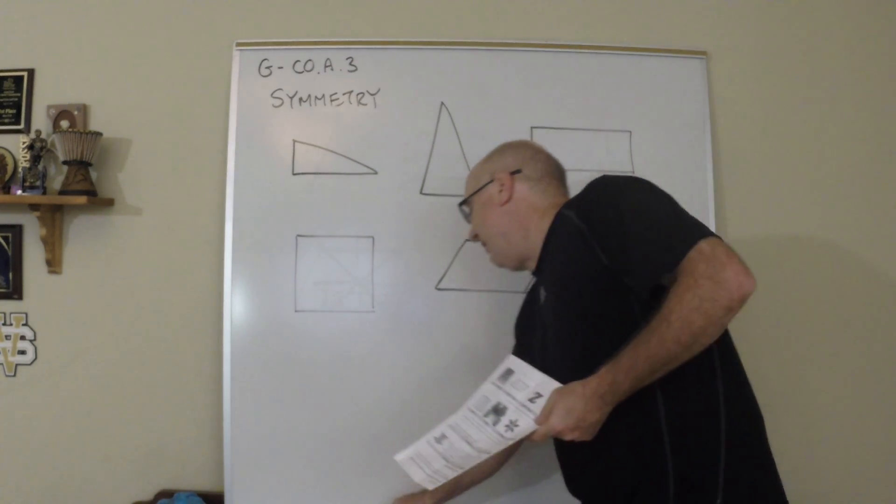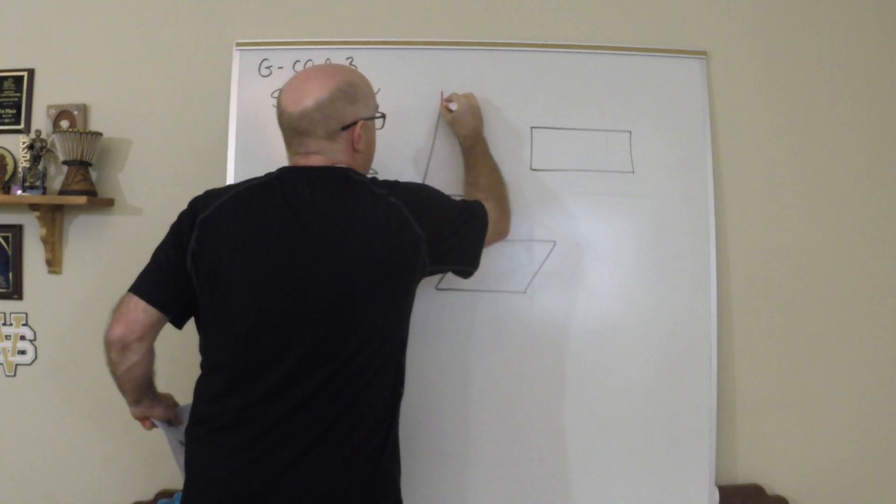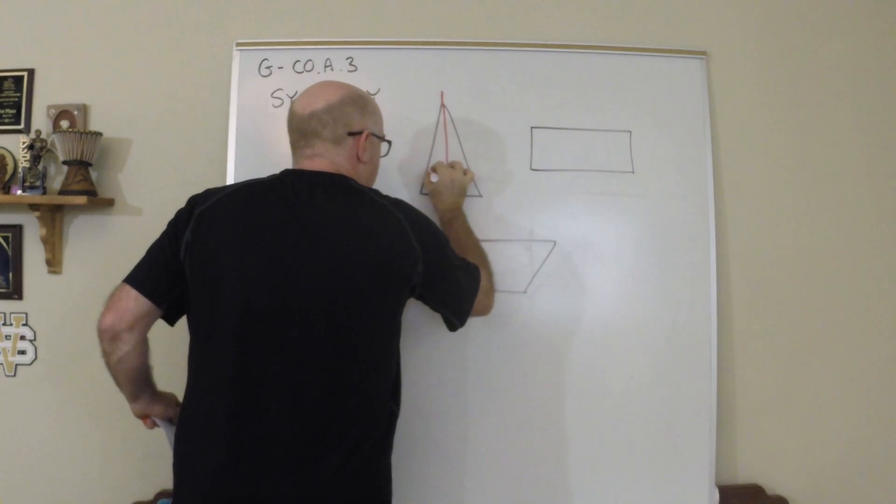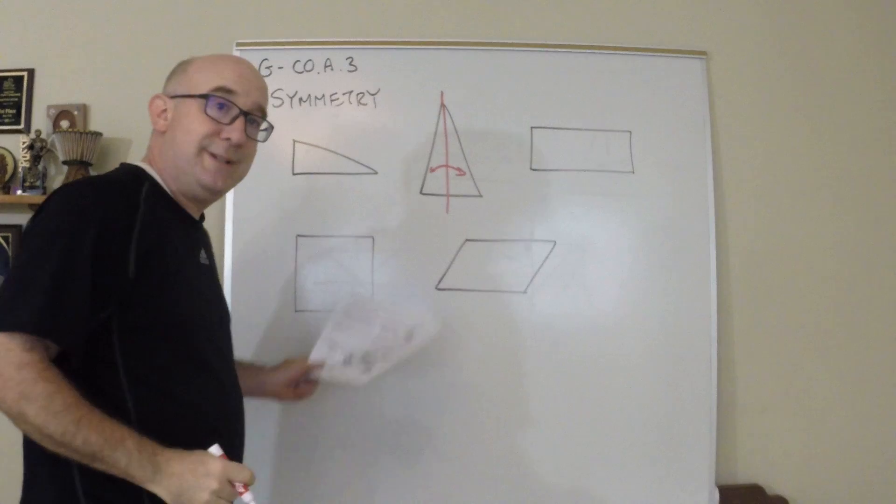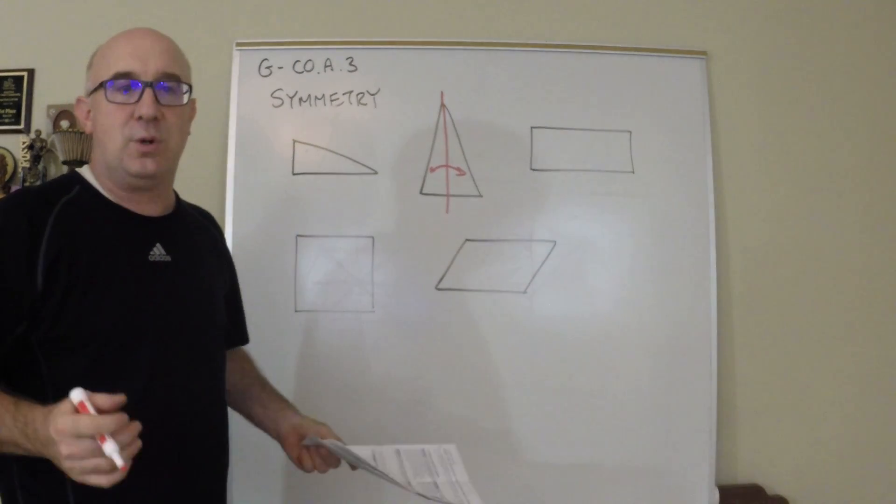So is there a line, like if this is an isosceles triangle, is there a line that would map those two sides, halves, onto themselves? And of course there is.